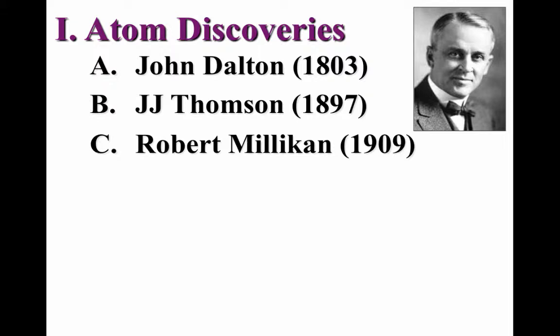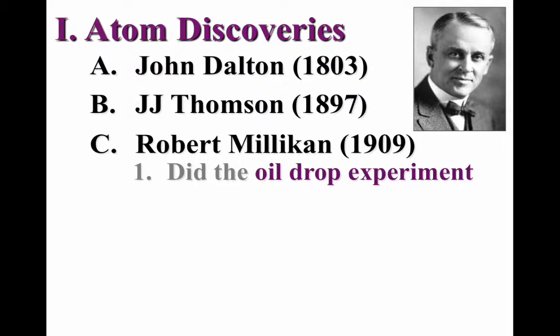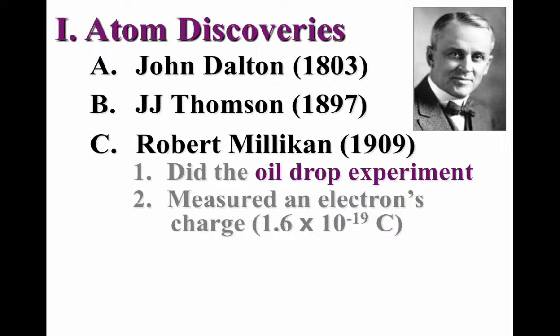Robert Millikan, an American physicist, performed an experiment using tiny drops of oil. These oil drops were given a charge, and then moved between two electrically charged plates. By using that physics, Millikan was able to determine the amount of charge on an electron. Using this newly measured value and a measurement determined by J.J. Thomson, Millikan was able to calculate the mass of an electron.